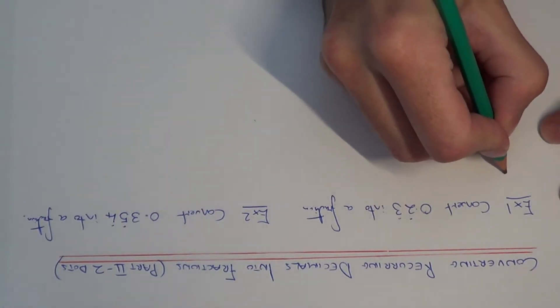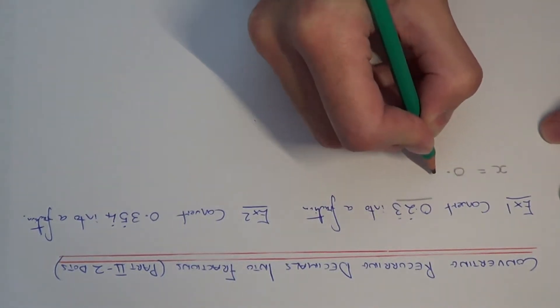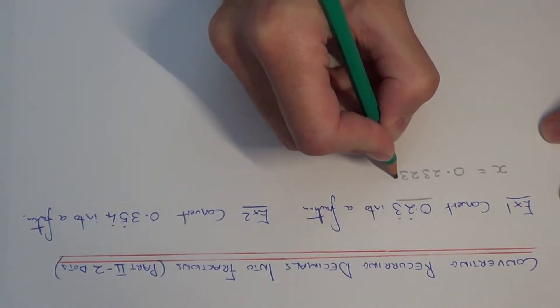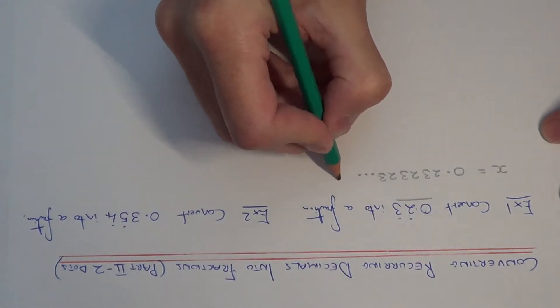So the first step is to let x equal this recurring decimal, so let me just write it out in full, so it is 0.232323 etc. So let me call this equation 1.